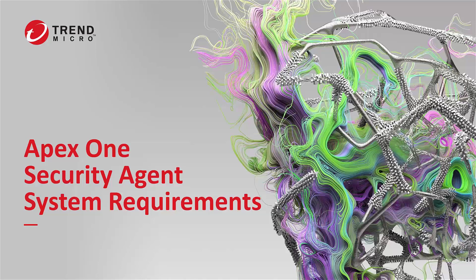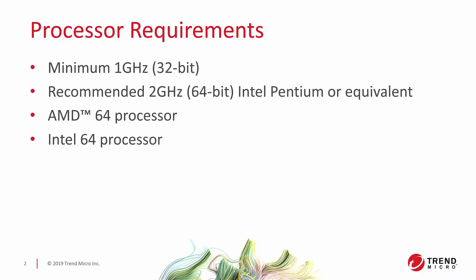Today we're talking about the security agent system requirements — the generic hardware requirements needed to install the agent on a system. As you can see, the processor requirements are fairly minimal. If you're running a 32-bit processor, the minimum is 1 GHz.